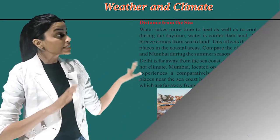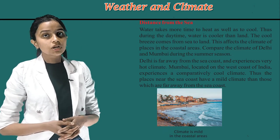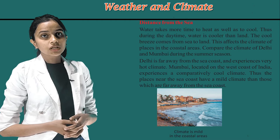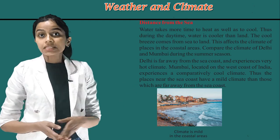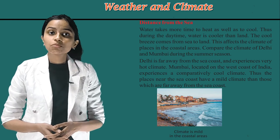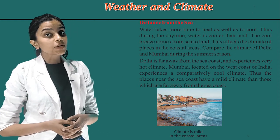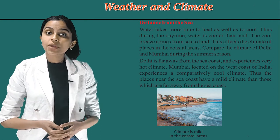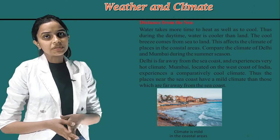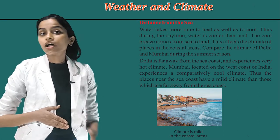The third factor is distance from the sea. Water takes more time to heat as well as to cool. Thus, during the daytime, water is cooler than land. The cool breeze comes from sea to land, and this affects the climate of places in the coastal areas. Compare the climate of Delhi and Mumbai during the summer season. Delhi is far away from the sea coast and experiences very hot climate. Mumbai, located on the west coast of India, experiences a comparatively cool climate. Thus, places near the sea coast have a milder climate than those which are far away from the sea coast.